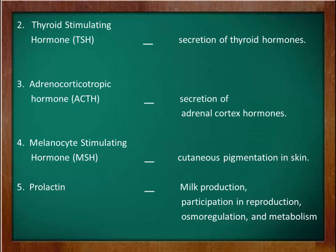The second hormone is thyroid stimulating hormone, or TSH. This hormone targets the thyroid gland, located in the neck region, and controls the secretion of thyroid hormones — mainly the thyroxine hormone.